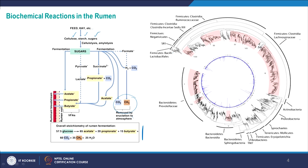And then we have other kinds of Firmicutes and some Actinobacteria, Proteobacteria, alpha-Proteobacteria, Spirochetes, Tenericutes, and some Bacteroidetes — this is the very diverse and yet very localized microbial community of the rumen.